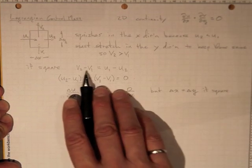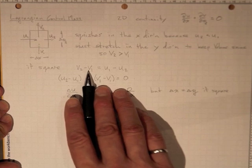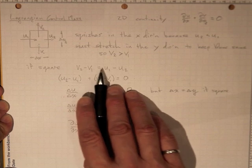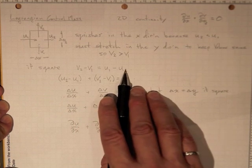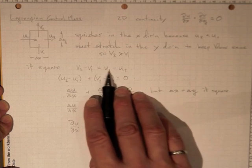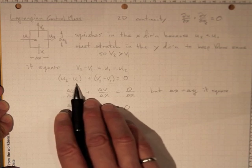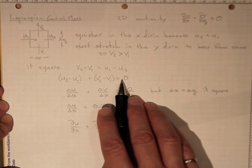Now if this thing is square, then v2 minus v1 has to be bigger than v1 by exactly the same amount that u2 is smaller than u1. We get the same equation: u2 minus u1 plus v2 minus v1 is equal to zero.